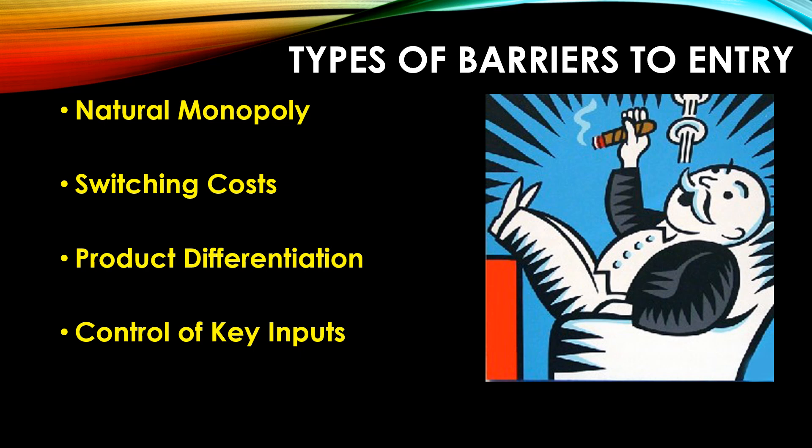A fourth type would be a control of a key input. So we have control of some resource or maybe a secret formula — some kind of absolute cost advantage from controlling a key input or a scarce resource. This can be a common type of barrier to entry.